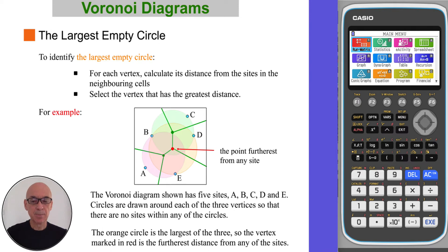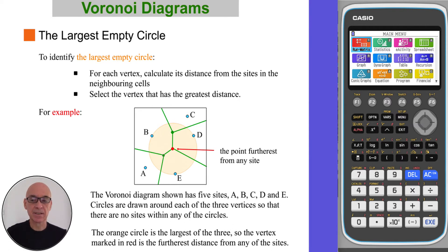In the example shown, the Voronoi diagram has five sites A, B, C, D and E. Circles are drawn around each of the three vertices so that there are no sites within any of the circles. And since the orange circle is the largest of the three, the vertex marked in red is the furthest distance from any of the sites.